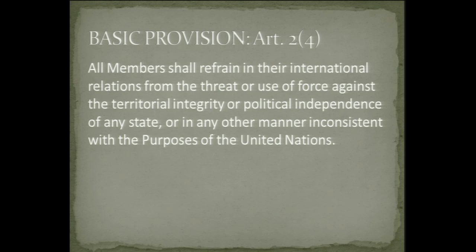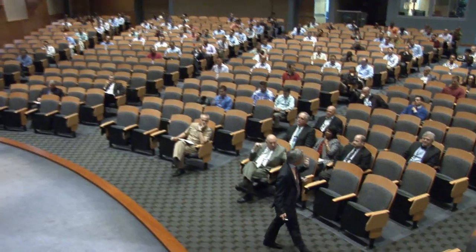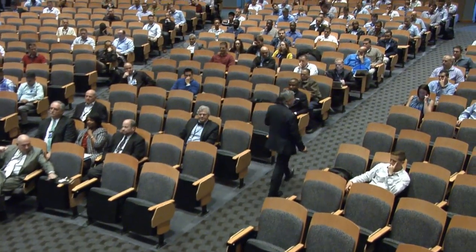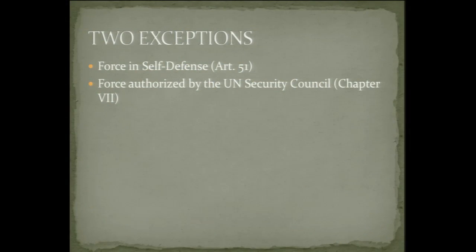I start with that because the starting point for understanding the Charter Framework for the Recourse to Force is Article 2, Paragraph 4 — coincidence? I'm sure it is, but it's an interesting point to note. Article 2(4) states: 'All members shall refrain in their international relations from the threat or use of force against the territorial integrity or political independence of any state, or in any other manner inconsistent with the purposes of the United Nations.' This is the cornerstone of the Charter Framework — a basic prohibition on not only the use of force, but even the threat to use force. In the Charter, there are only two explicit exceptions to this Article 2(4) prohibition that are still active.